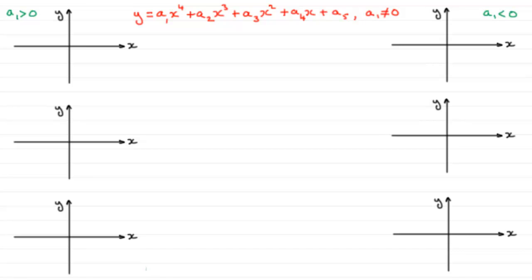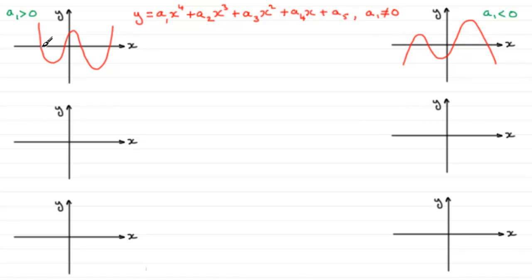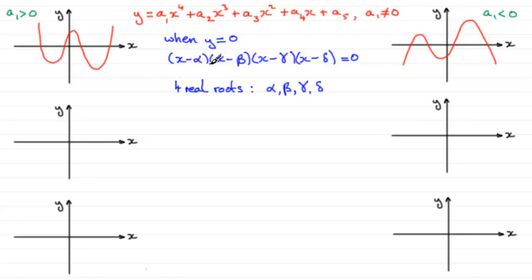For instance, if a1 is greater than zero, this is the kind of graph we would expect. In this particular circumstance we've got four real roots — let's call them alpha, beta, gamma, and delta. So when y equals zero, we would expect this equation to equal zero and factorize to x minus alpha, x minus beta, x minus gamma, and x minus delta, giving us the four real roots alpha, beta, gamma, and delta.